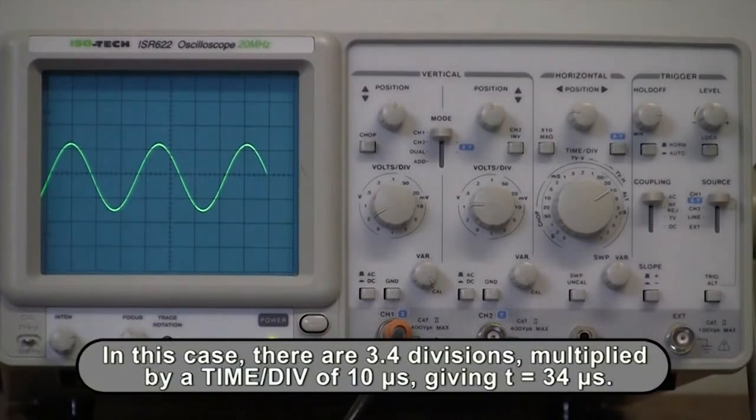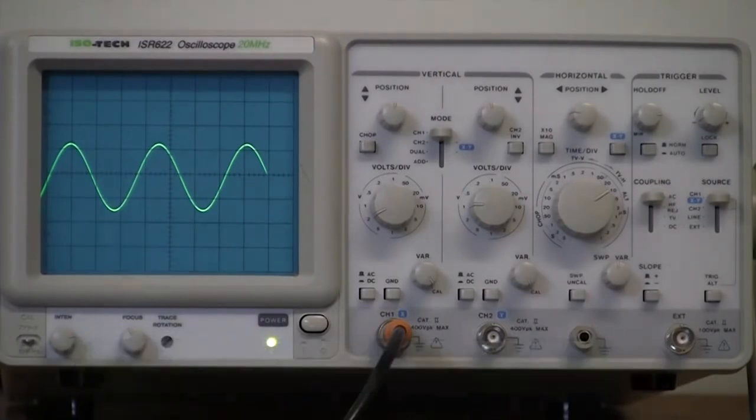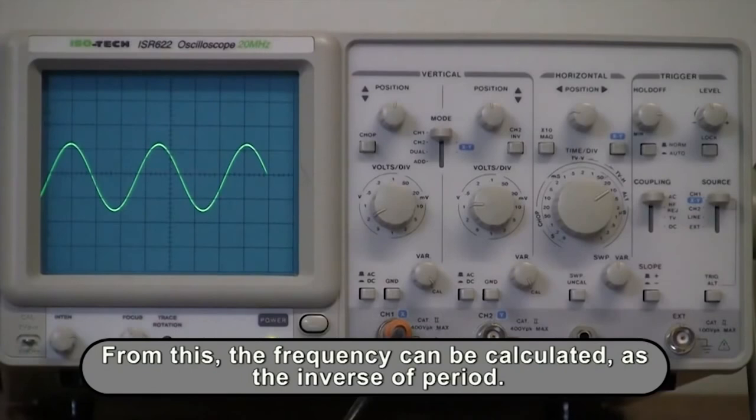In this case, there are 3.4 divisions, multiplied by a time per division of 10 microseconds, giving a period of 34 microseconds. From this, the frequency can be calculated as the inverse of the period.